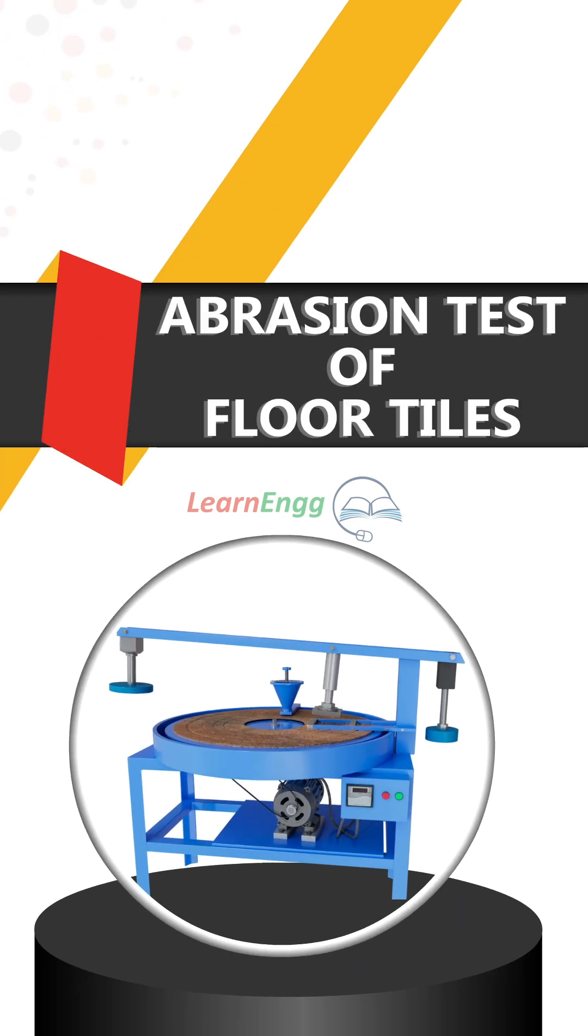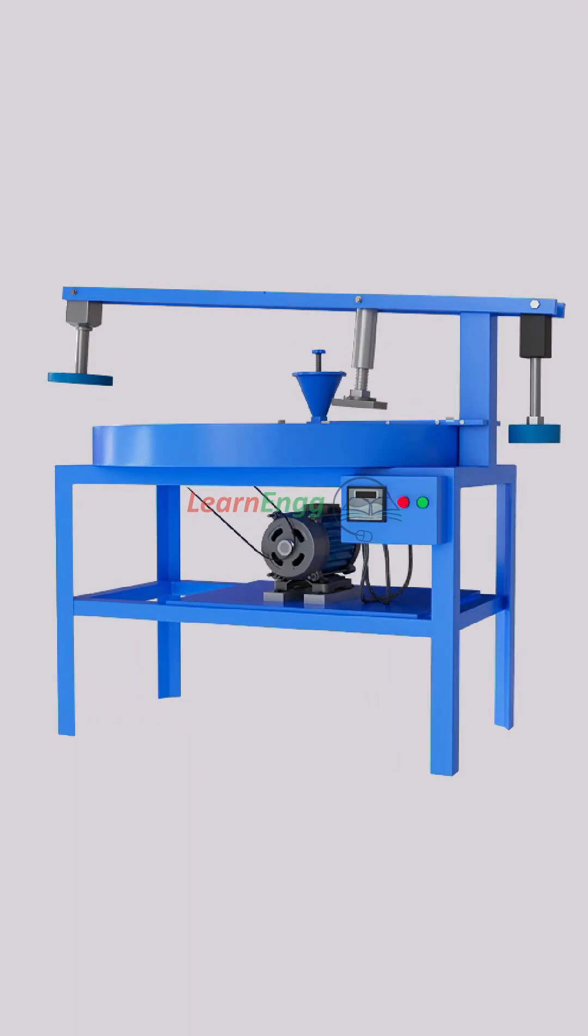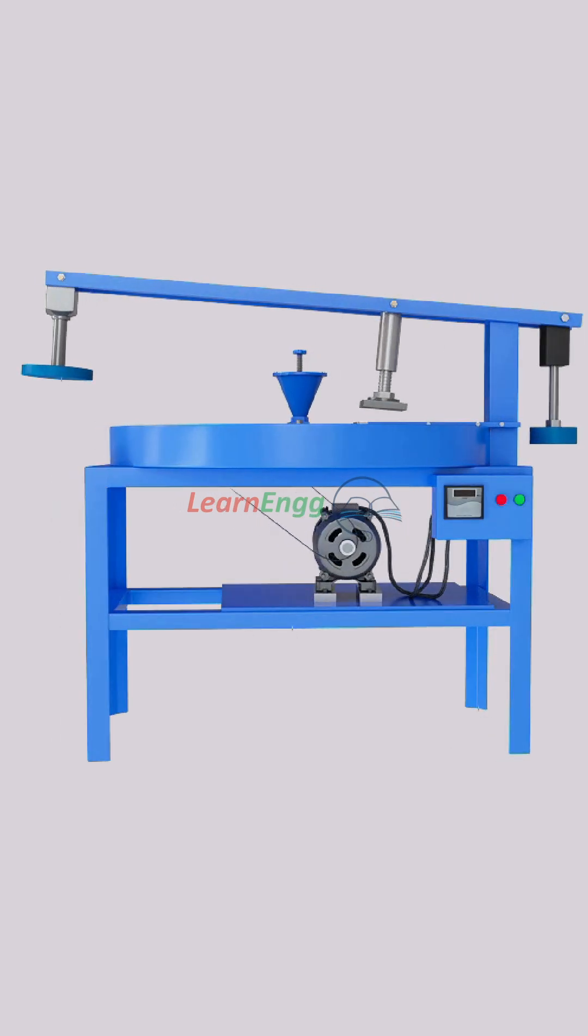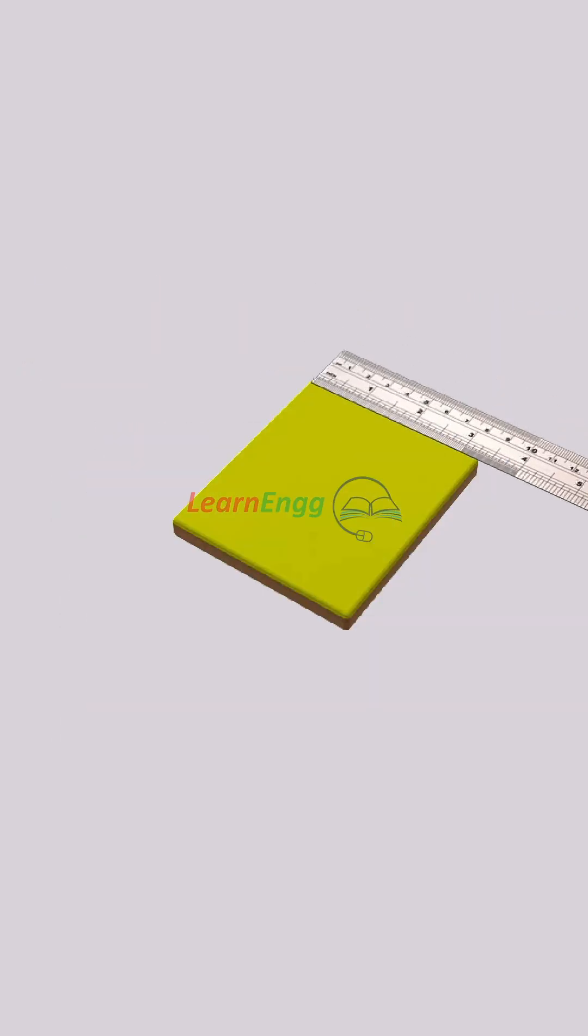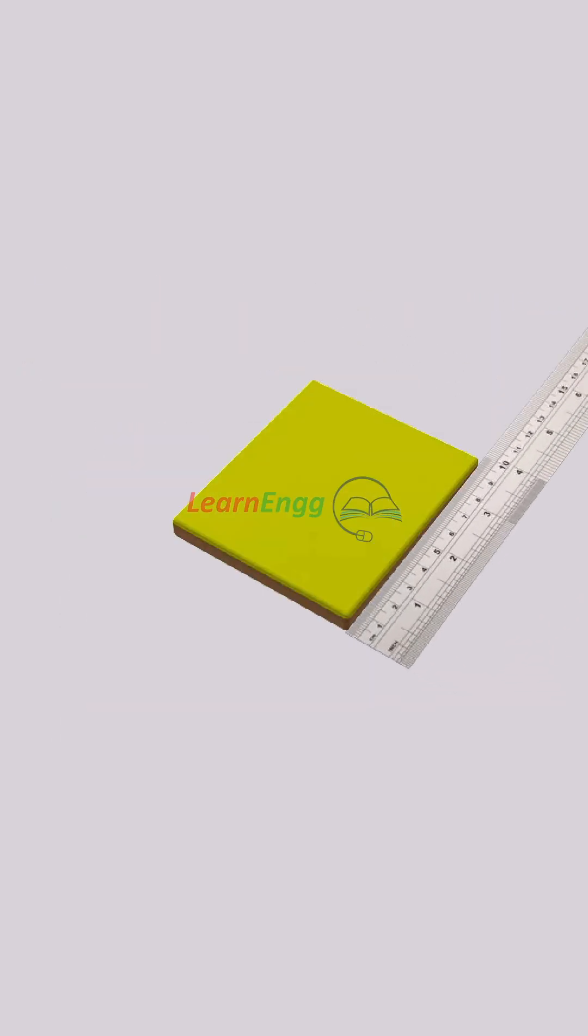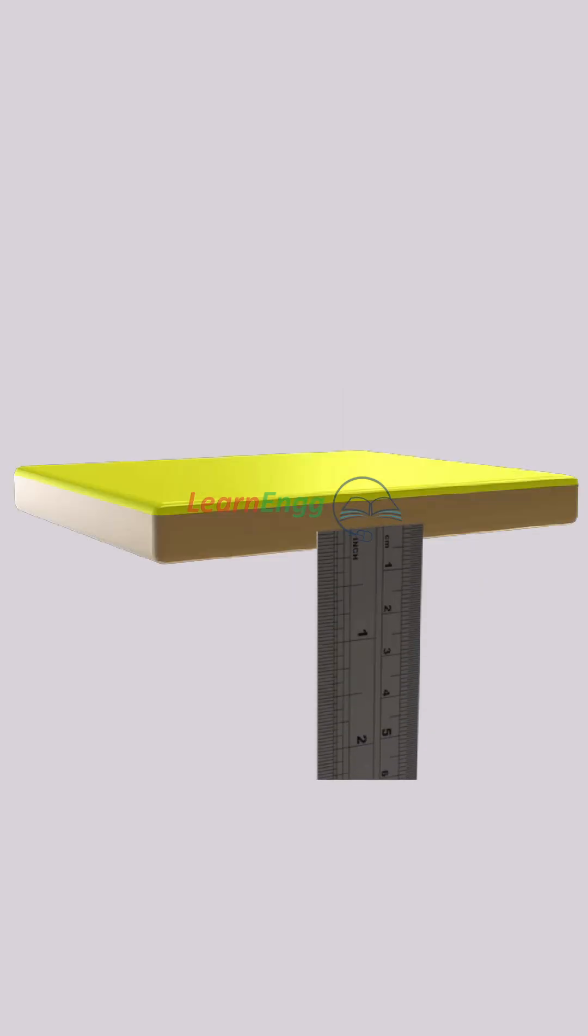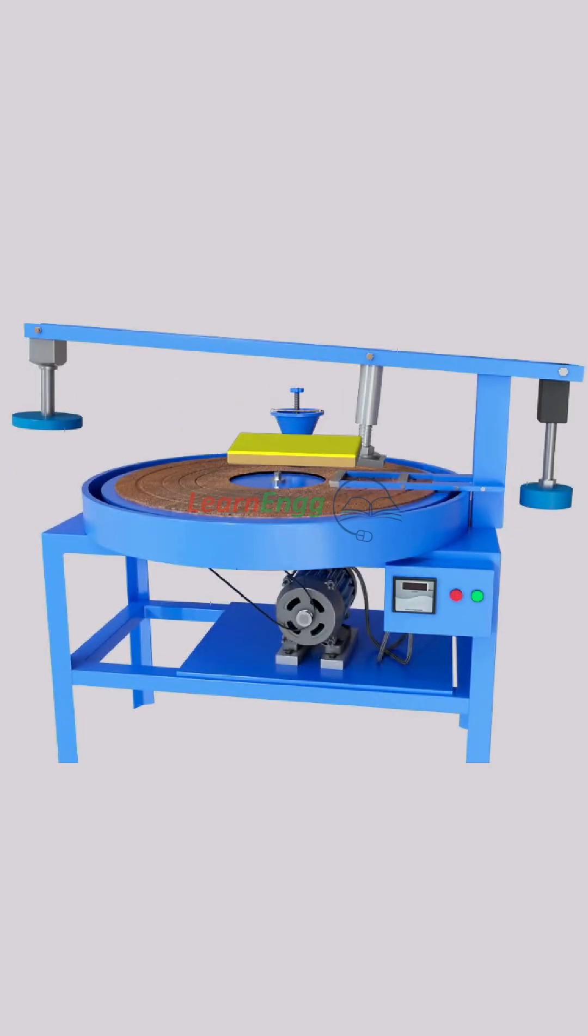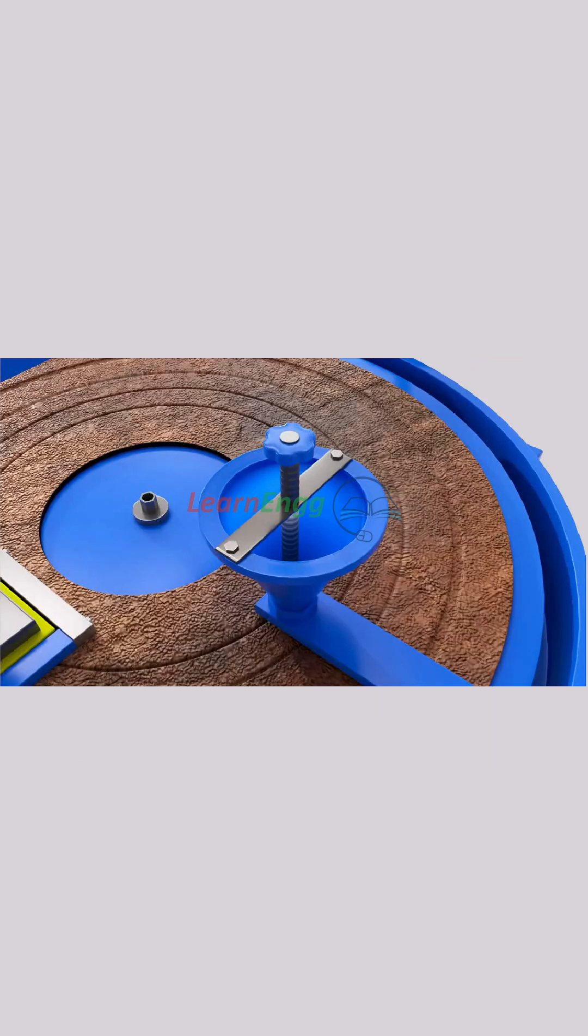Abrasion test of floor tiles. The abrasion testing machine used for the test is shown. The dimensions of the tile specimen before the test is taken. Place the tile specimen in the holder. To start with the test, the abrasive powder is filled in the funnel.